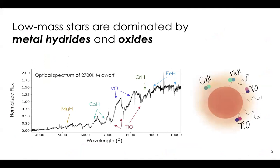I wanted to start with an introduction to metal hydrides and metal oxides in low-mass stars, because we know their spectra a lot better than we know the spectra of exoplanets. We know that the spectra of low-mass stars are dominated by metal hydrides and metal oxides in the optical region. Here I'm showing the spectrum of an M-dwarf star with a temperature of 2700 K — a medium resolution optical spectrum with wavelength and normalized flux.